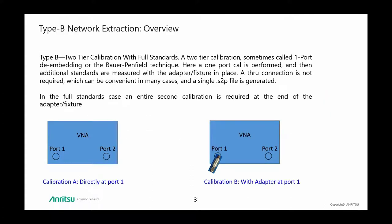The type B network extraction method involves carrying out two one-port calibrations. The first one-port calibration is directly at the test port — either port 1 or port 2. The second calibration is separate but with the adapter connected to the same port. You can get an idea of this from the pictures shown.